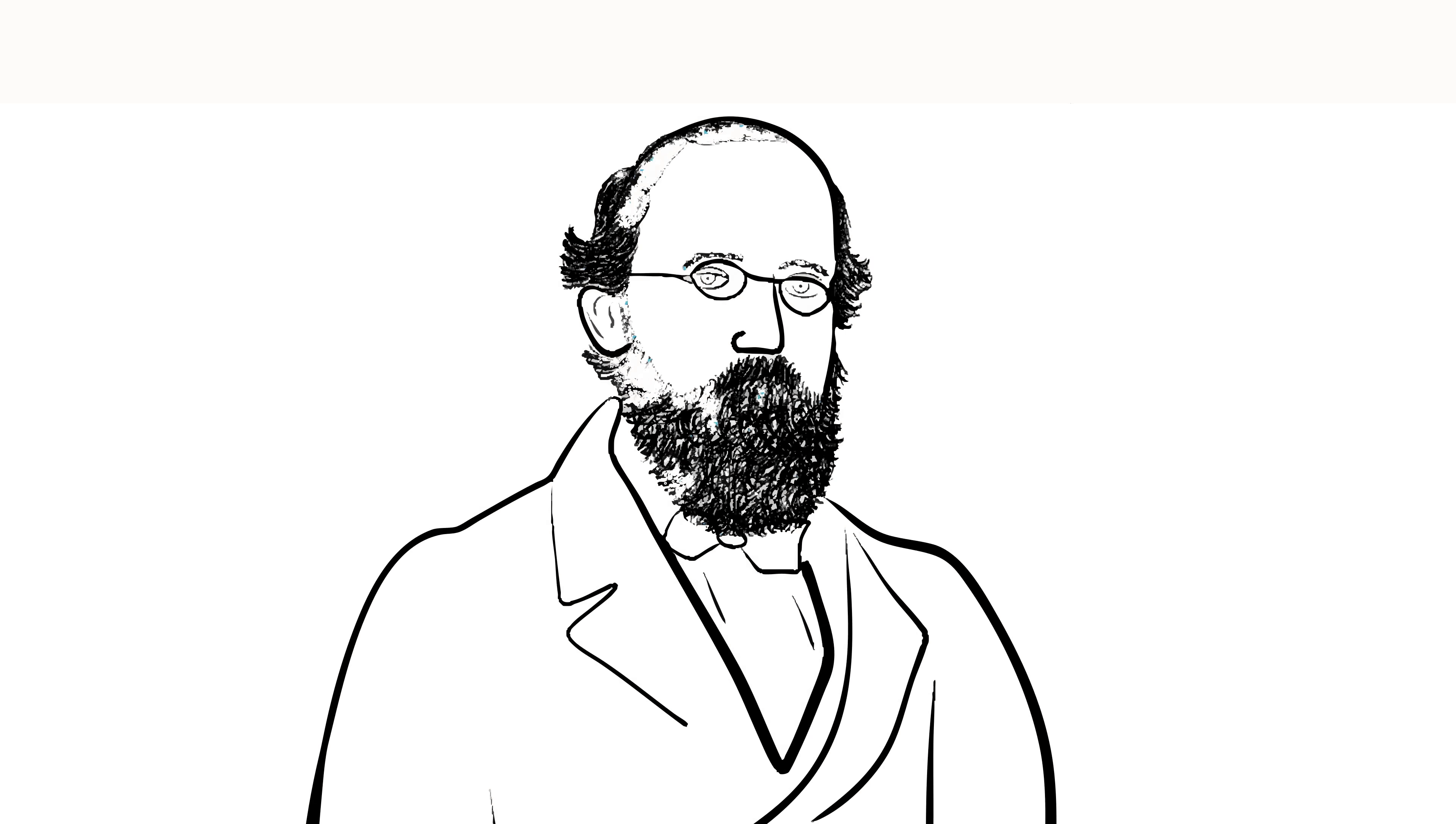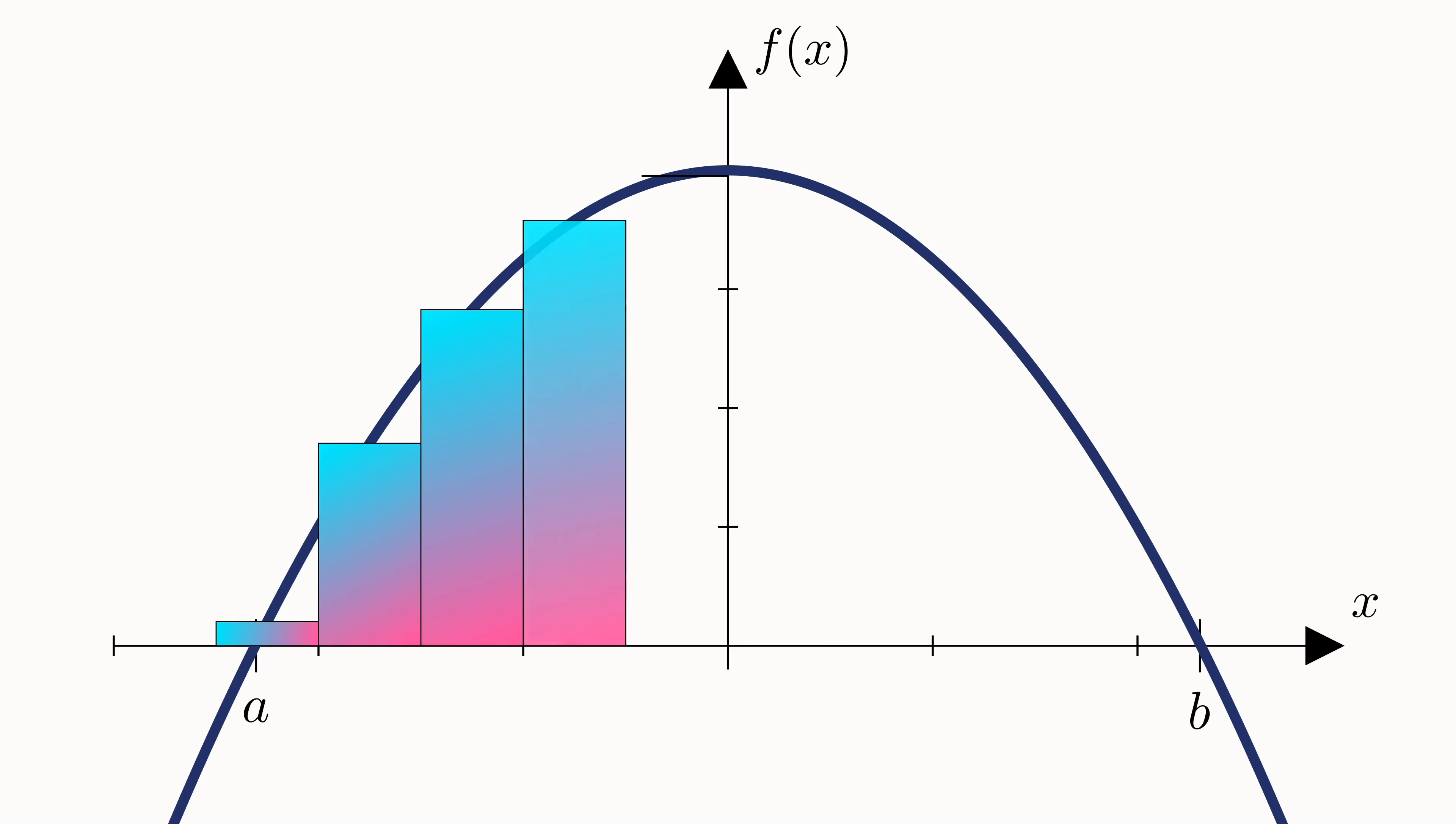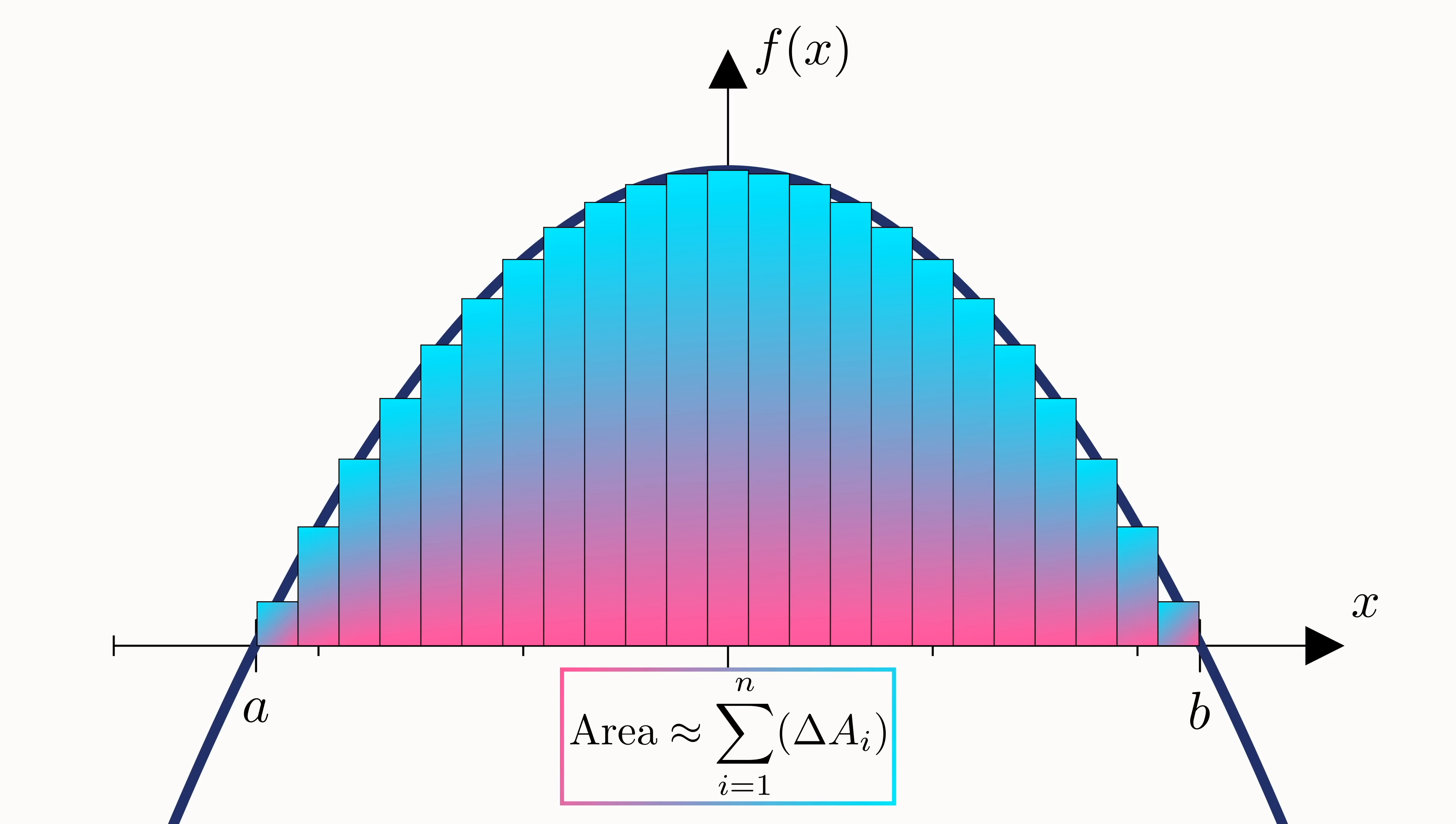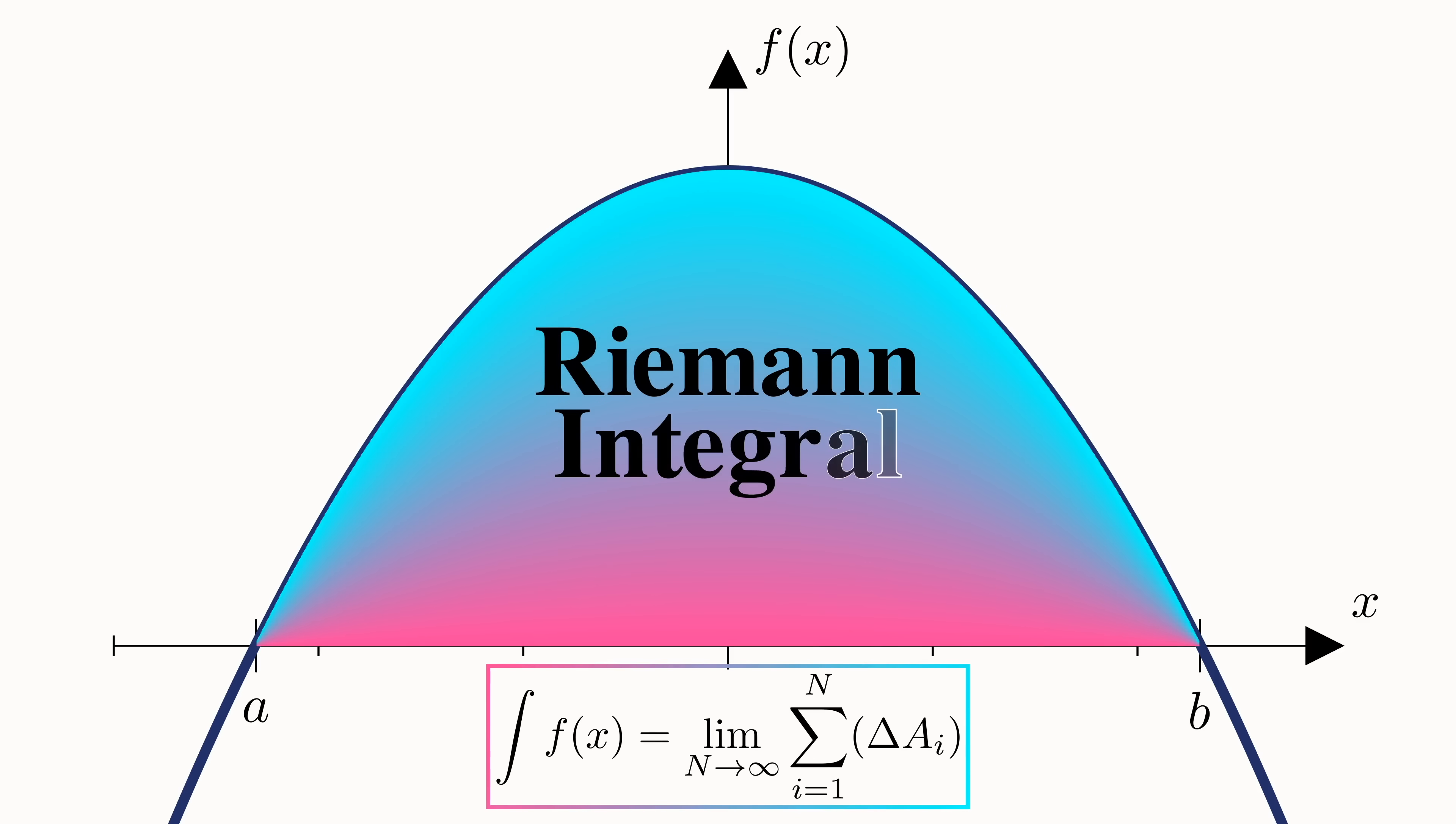In 1868, Bernard Riemann invented the first ever rigorous definition of an integral. This powerful technique allowed mathematicians to approximate the area under a curve by first calculating the areas of simple rectangles and then summing them all up. The more rectangles, the better the approximation. And in the limit that the number of rectangles approached infinity, one would arrive at the Riemann integral.